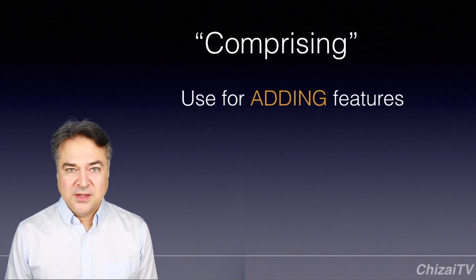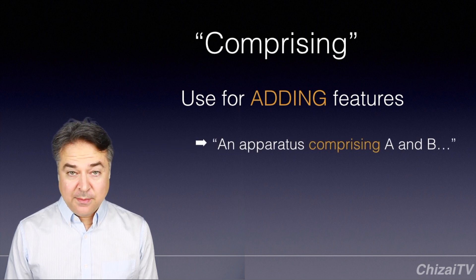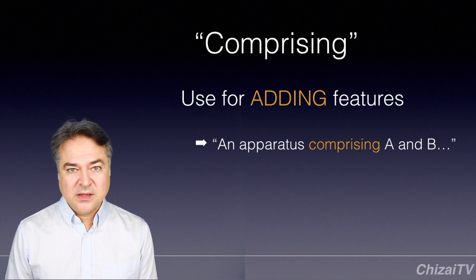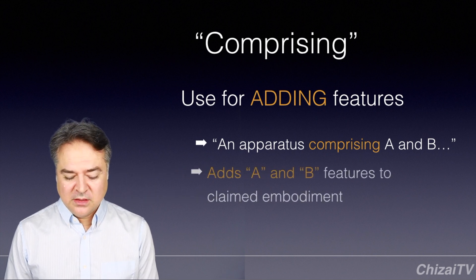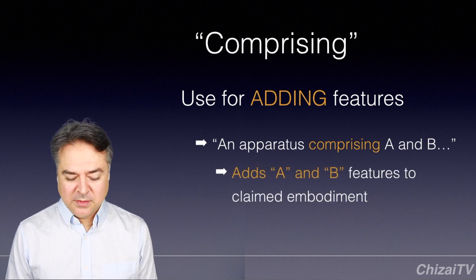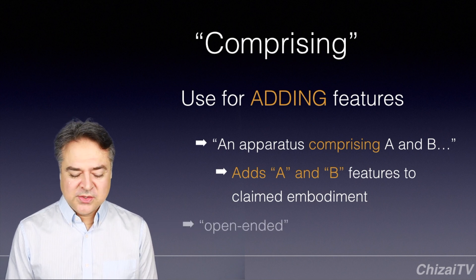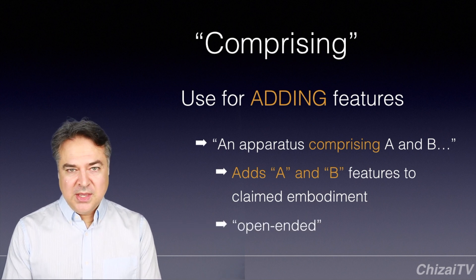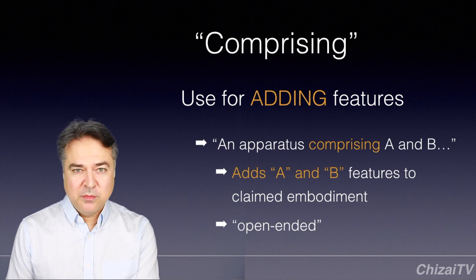So, comprising. Comprising is used to add features to your claims. For example, 'an apparatus comprising A and B' means you have an apparatus and it has the parts A and B. So it adds the features of A and B to the claimed embodiment. And it's open-ended language, meaning that A and B are the elements of your apparatus, but your apparatus could have more features.